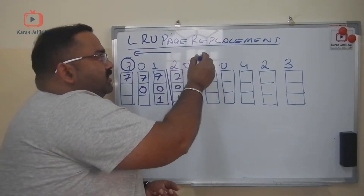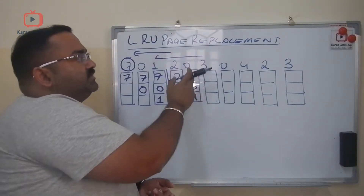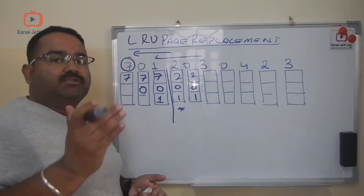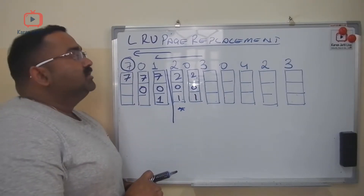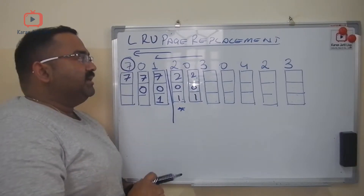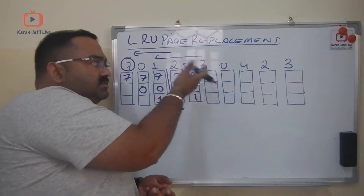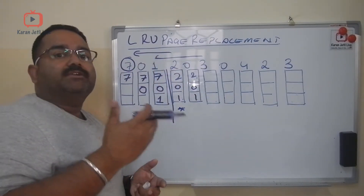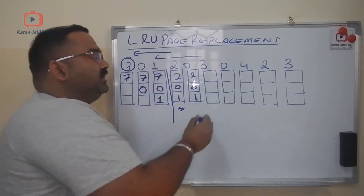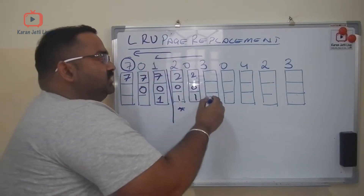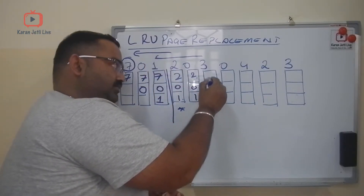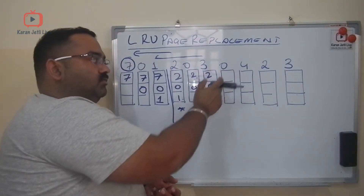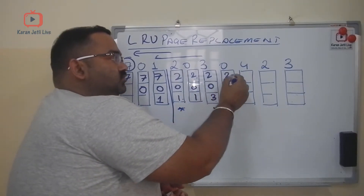Now I need page 3. Looking back at the cache with pages 0, 2, and 1: page 0 was just referenced, page 2 was referenced before 0, and page 1 is the page not used for the longest period. So I replace page 1 with page 3. Cache becomes: 3, 2, 0.